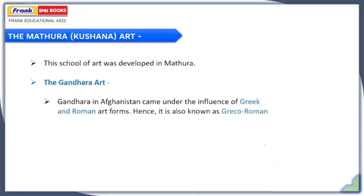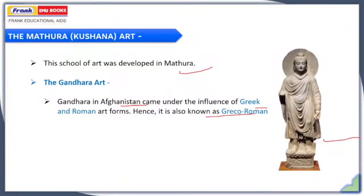The Mathura or Kushana school of art was developed in Mathura. The Gandhara art — Gandhara in Afghanistan came under the influence of Greek and Roman art forms, hence these are known as Greco-Roman. A sculpture made in the Gandhara art style, depicting an idol of Lord Buddha, can be seen on the screen. So that was it in this video.